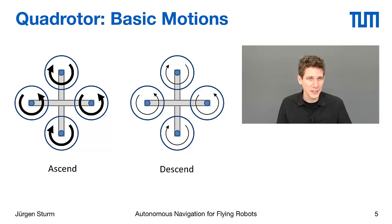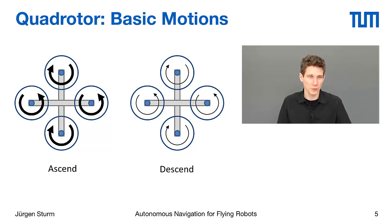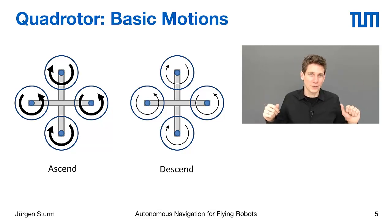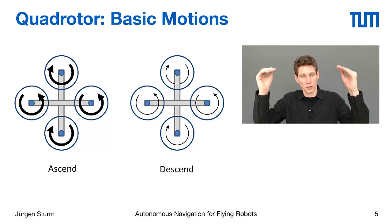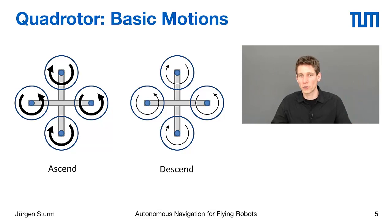For ascending, you can just increase equally the speed of all four motors, and that will slowly move your quadrotor up. On the other hand, if you reduce the speed equally of all four motors, then you will reduce the overall thrust and that will bring your quadrotor down again.